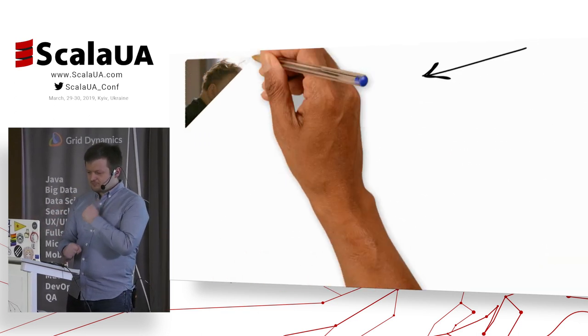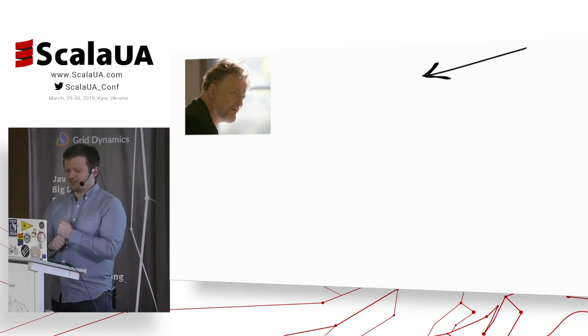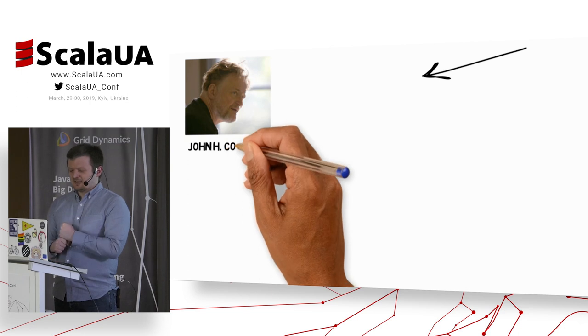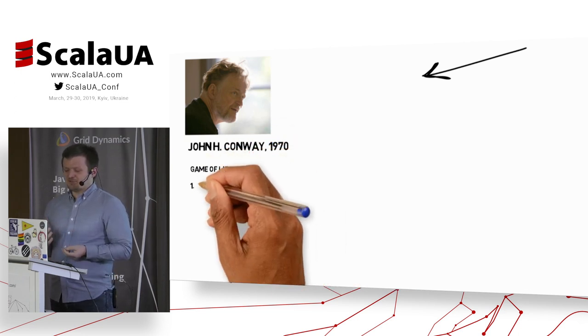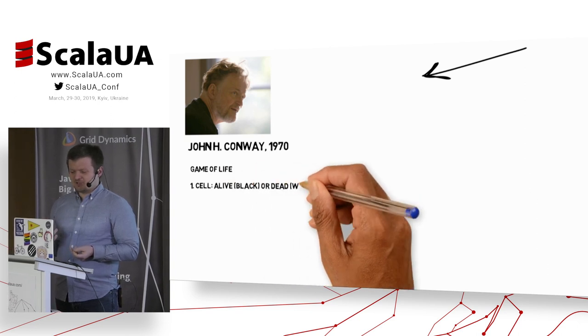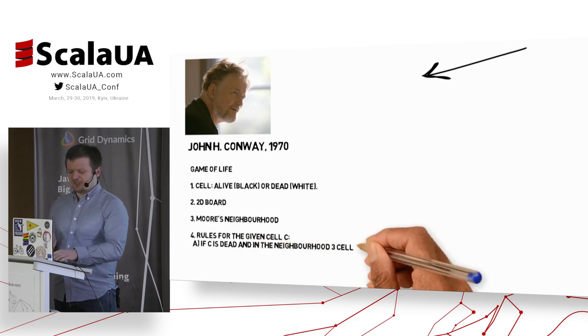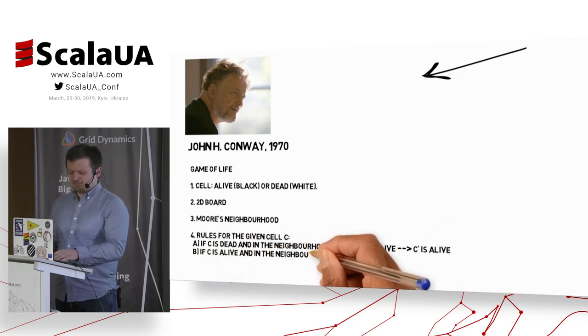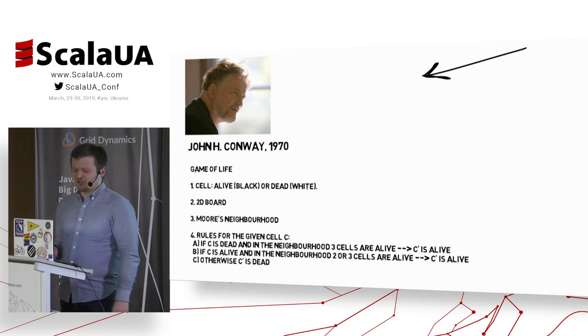And Game of Life, of course, the most popular cellular automaton out there, was developed as some sort of a theory by John Conway, who is a professor at Stanford, I believe. And in the 70s, it's a very simple thing. First, Game of Life was played on a board of checkers and not on a computer.